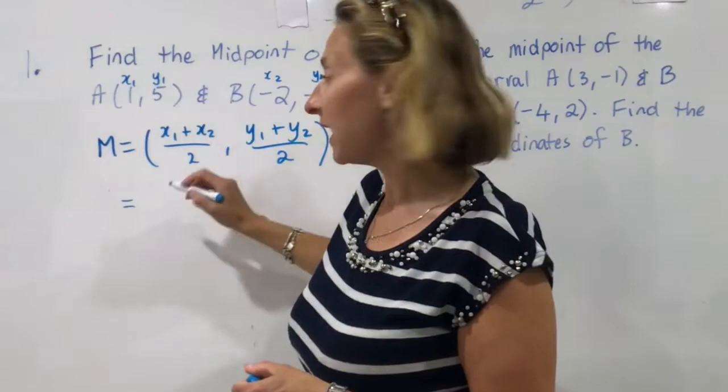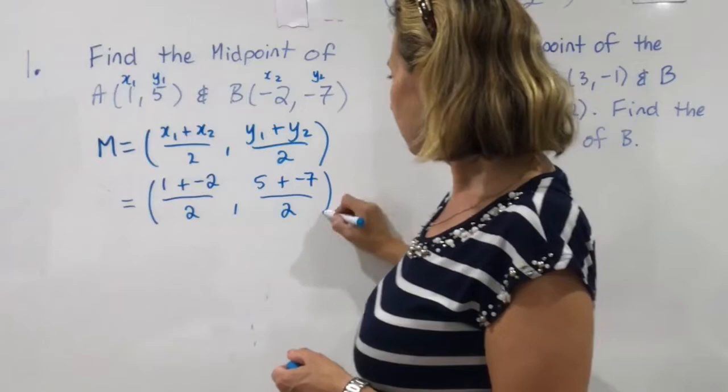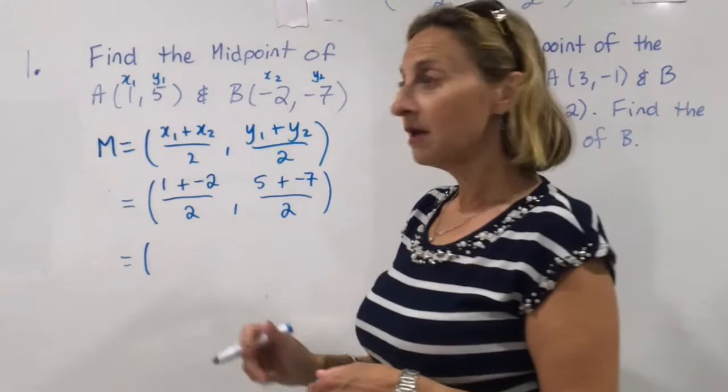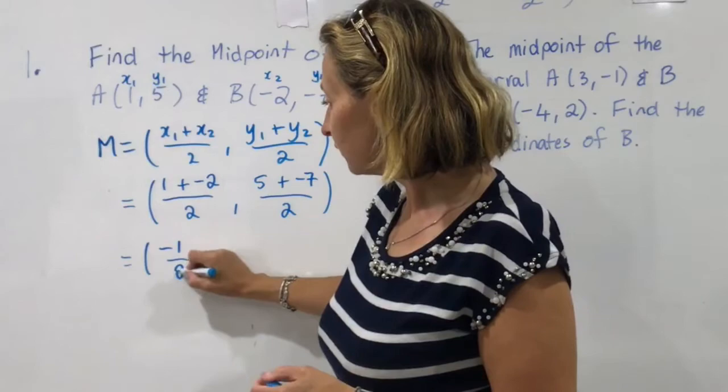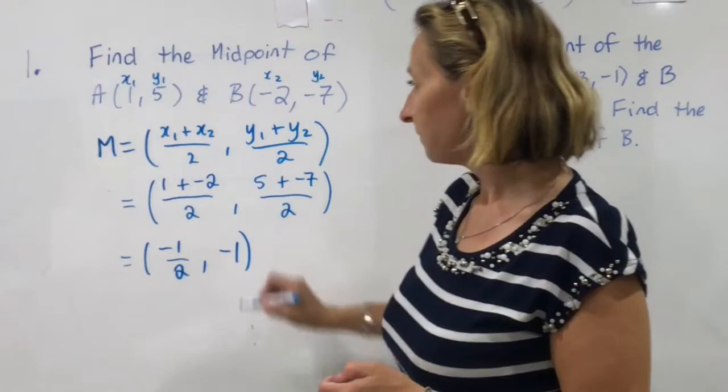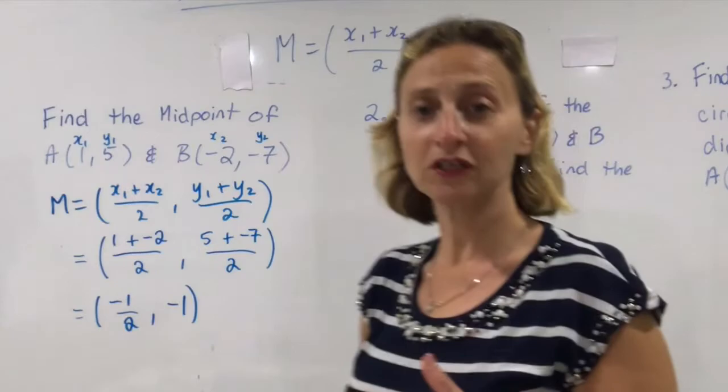Once the points are labeled then all I need to do is substitute the points into the right place and work it out. x1 plus x2 over 2 and y1 plus y2 over 2. If you can do them in your head that's great. If you need a calculator use a calculator. Make sure you do the x part first and then the y part second. They are separate things. 1 plus minus 2 on 2 is minus 1 over 2. 5 minus 7 over 2 is minus 1. That's the midpoint of our two points A and B. That's the easiest type of question that you'll ever get for midpoint.